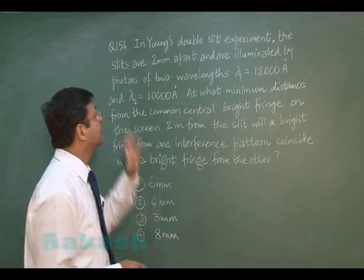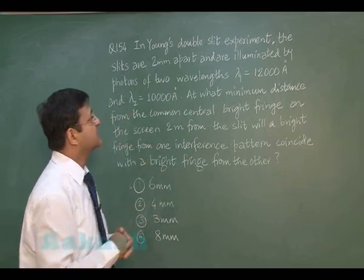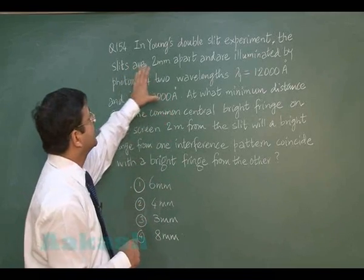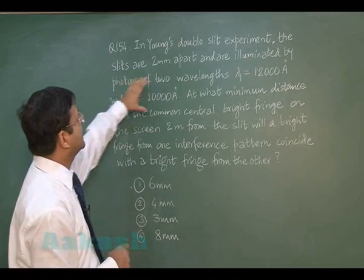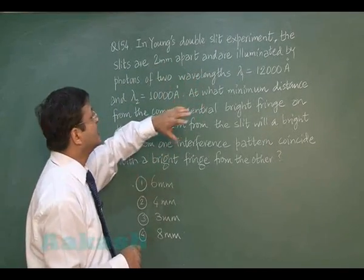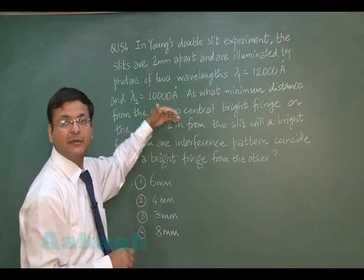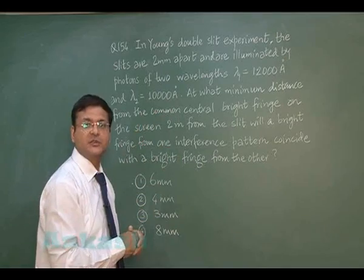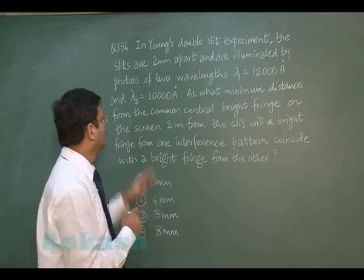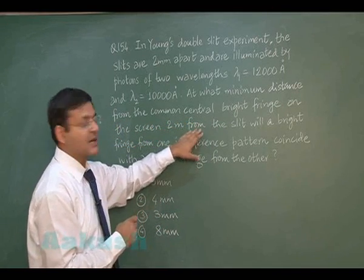In question 154, based on wave optics and Young's double slit experiment, the slits are 2 millimeter apart. The setup is illuminated by photons of 2 wavelengths, lambda 1 and lambda 2. We need to find the minimum distance x from the common central bright fringe on the screen, which is 2 meters apart from the slit, where a bright fringe from one interference pattern coincides with a bright fringe from the other.